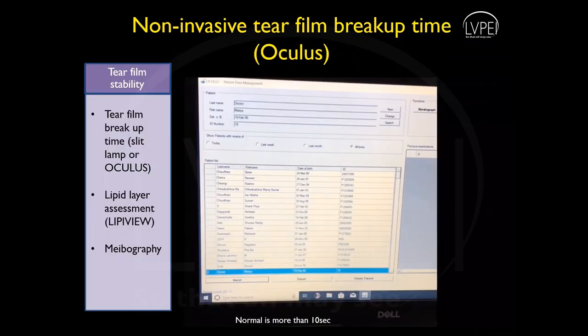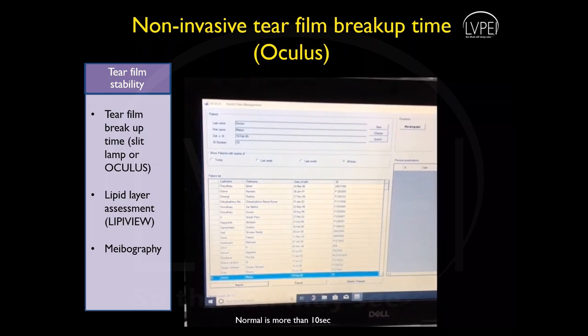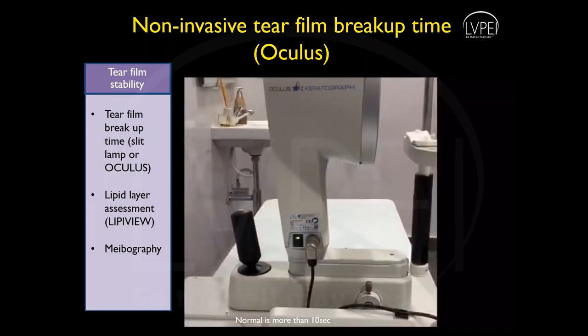Tear film stability is the most important indicator of tear film dysfunction. It can be assessed by noting the tear film breakup time on slit lamp after application of fluorescein into the patient's eye and waiting for the appearance of the first dry spot. It can also be done by a non-invasive method on the Oculus.